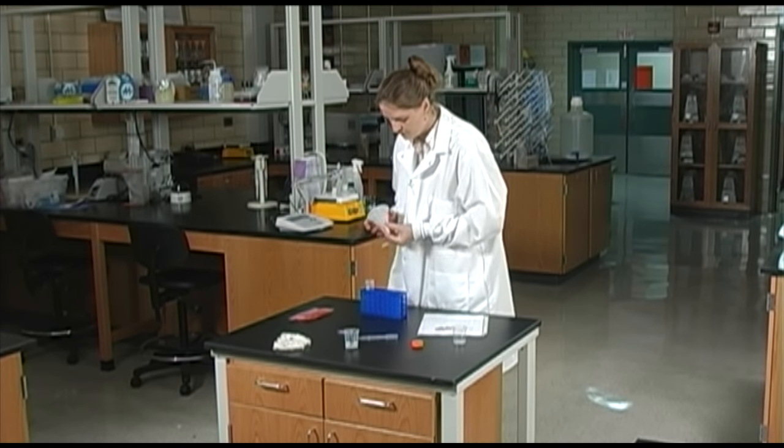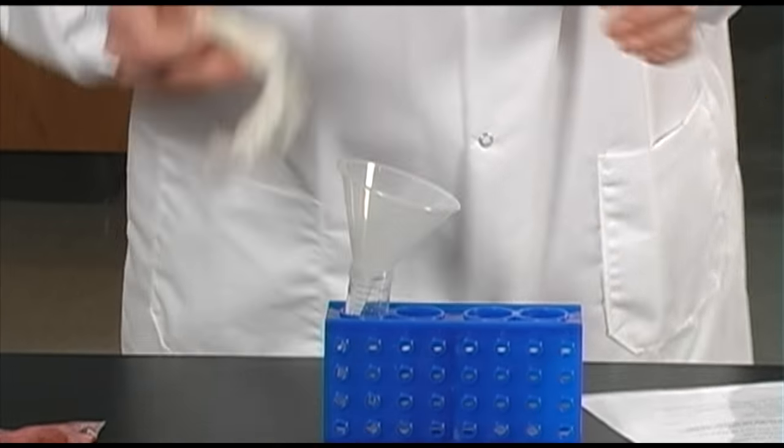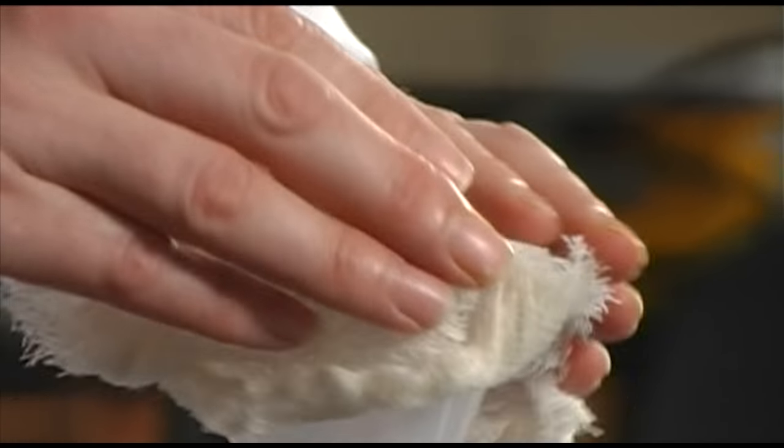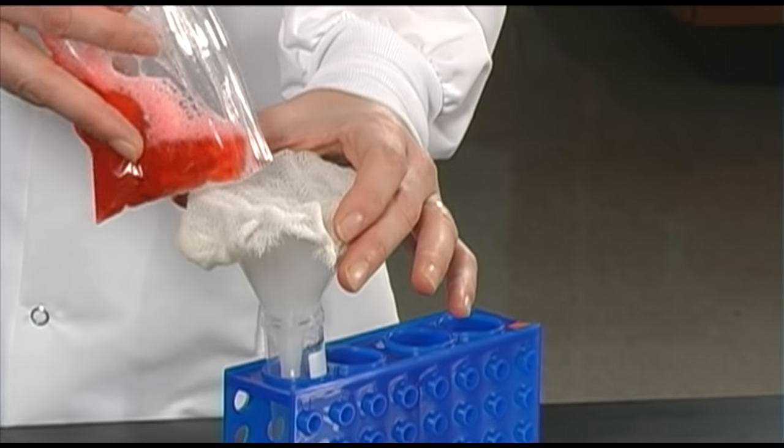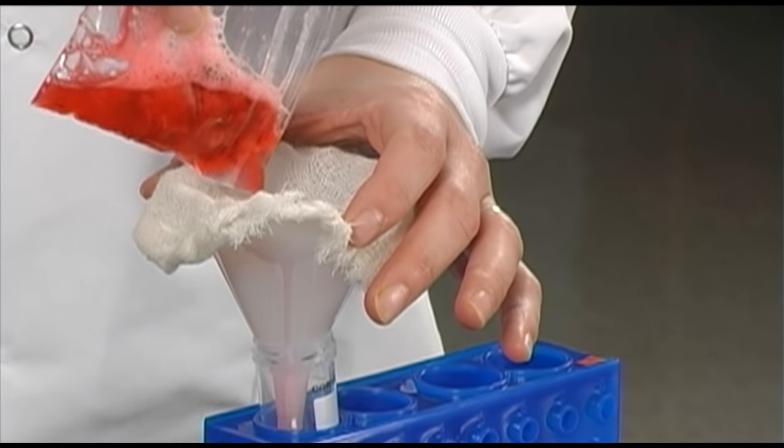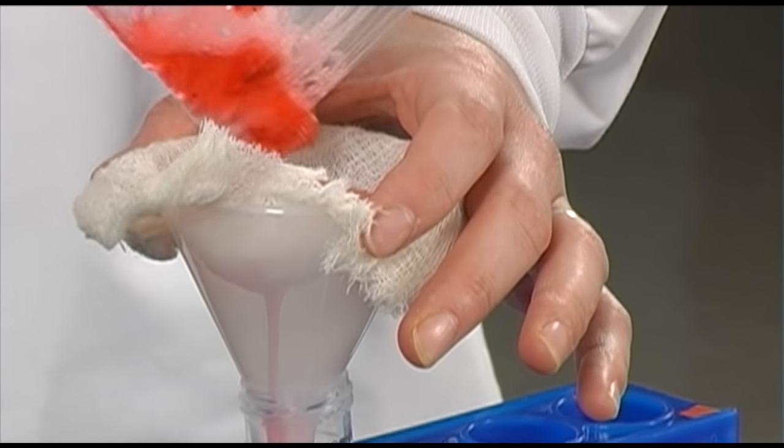Place a funnel into the 50 milliliter tube. Next, place a piece of cheesecloth inside the funnel. Open your Ziploc bag and pour the mixture of strawberry and extraction solution through the cloth and into the funnel.